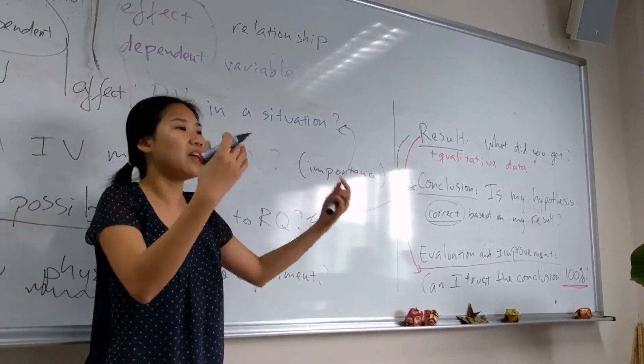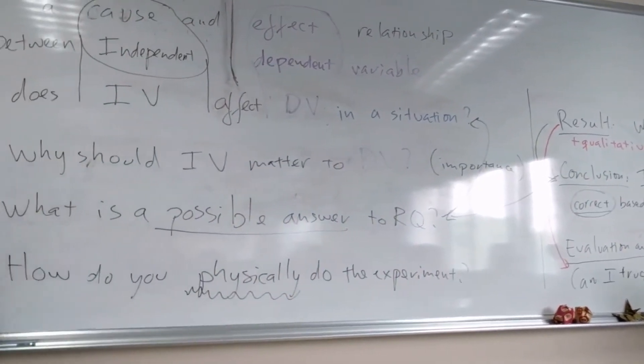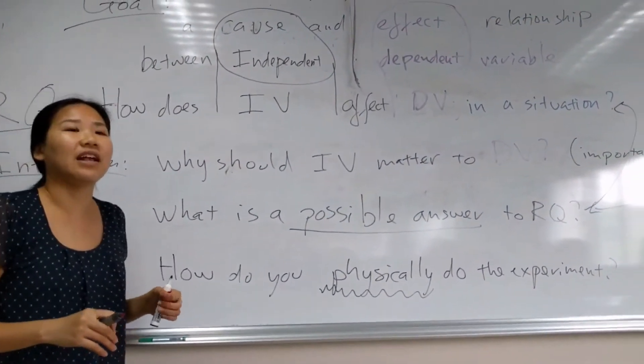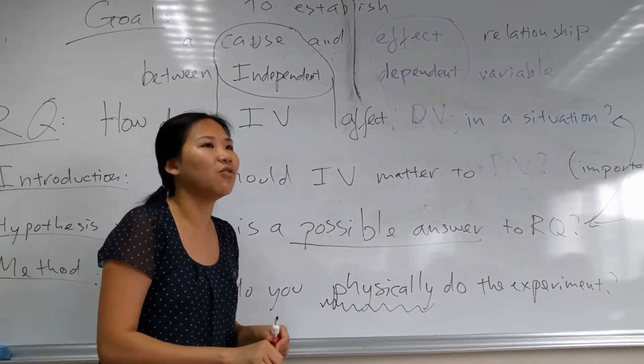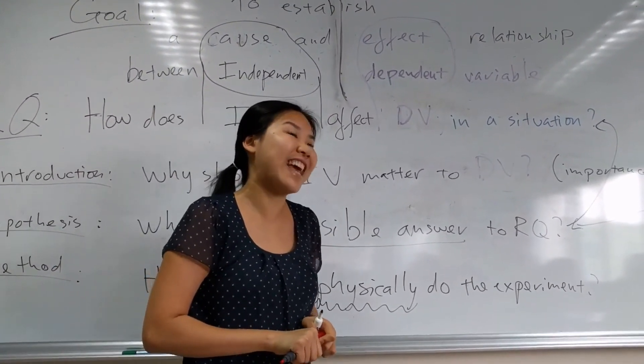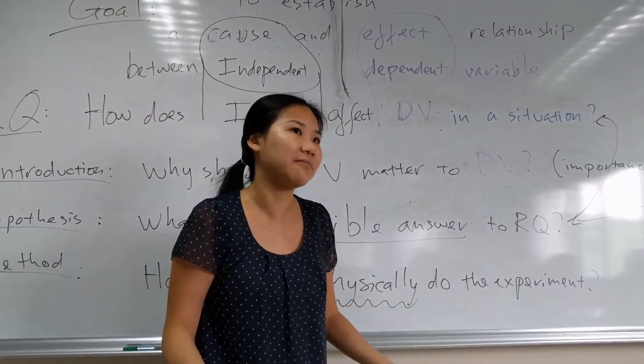Either it's a systematic error, some kind of error with your method. Or if it's like, oops, I made some kind of mistake. Or, oops, I only do one trial, so I can't trust it 100% of the time. Evaluation.